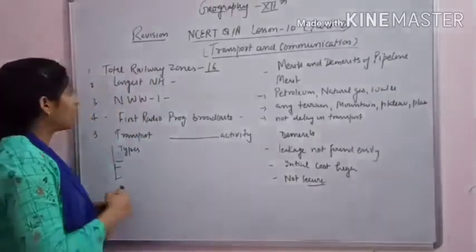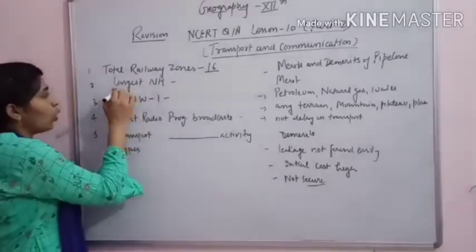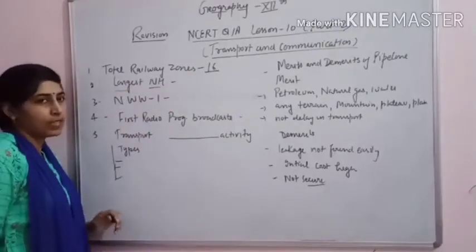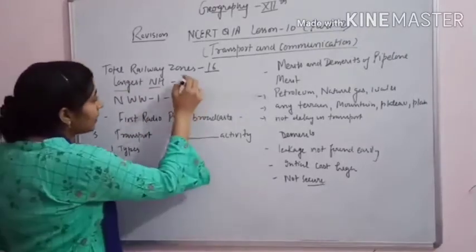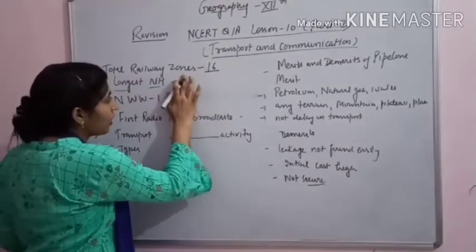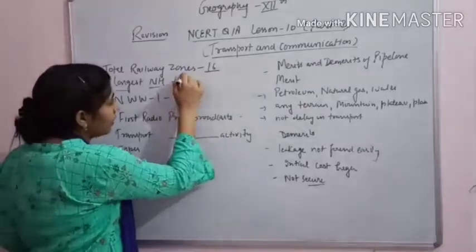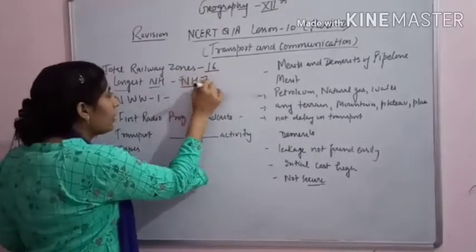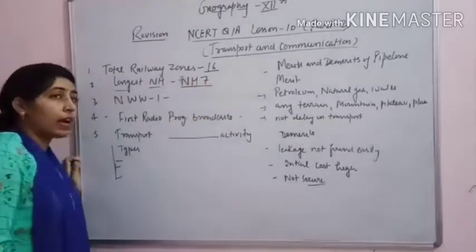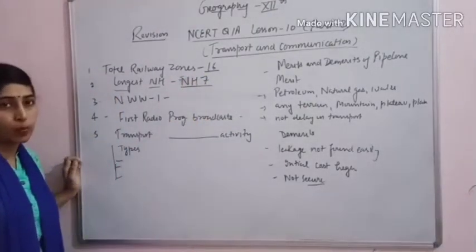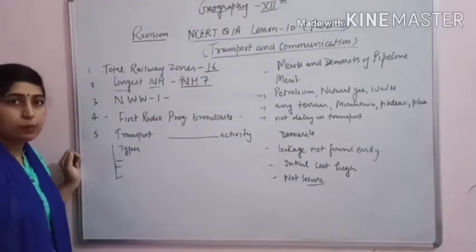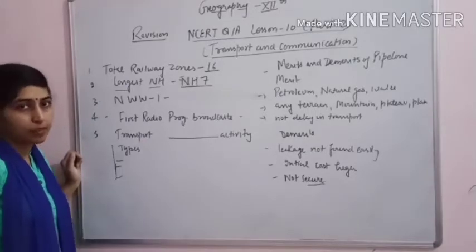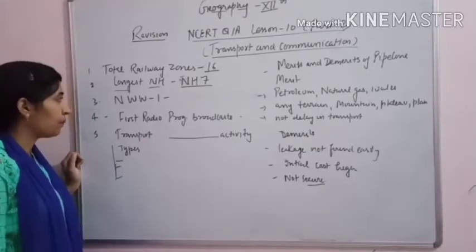The next question is the longest national highway. The longest national highway is NH7, from Varanasi to Kanyakumari. It is the longest national highway in India.